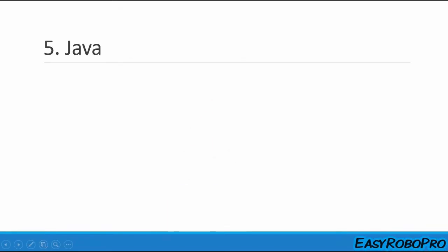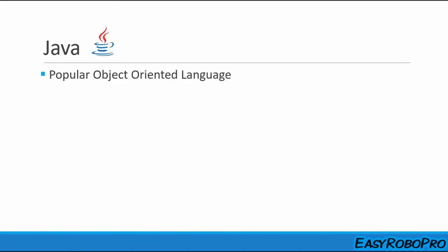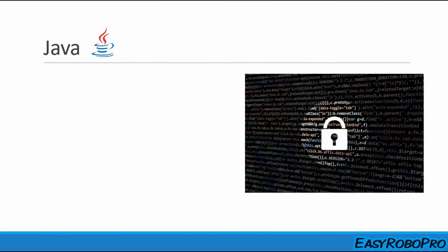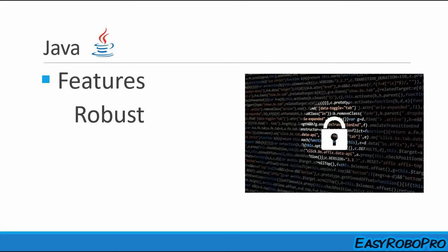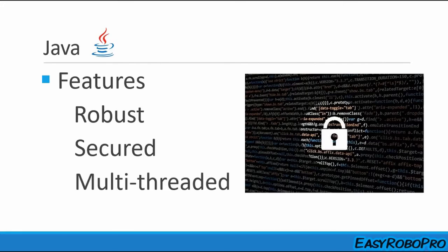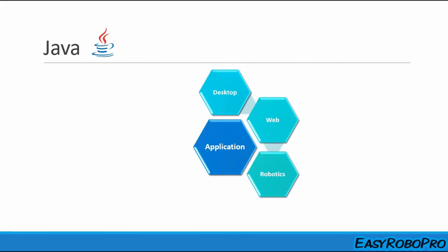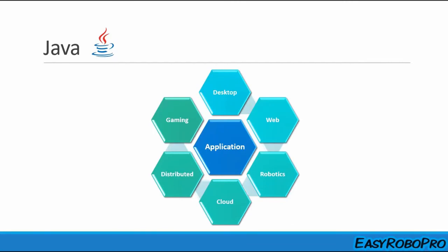At position 5, we have Java programming language. Java is a very popular object-oriented programming language which follows the principles of OOP, meaning it structures programming in terms of objects where every object has certain properties and certain functions. Java is robust, secured, multithreaded, and platform independent. Talking about its applications, Java is used in desktop-based applications, web-based applications, robotics, cloud-based applications, distributed systems, gaming, and also major banking and investment applications.